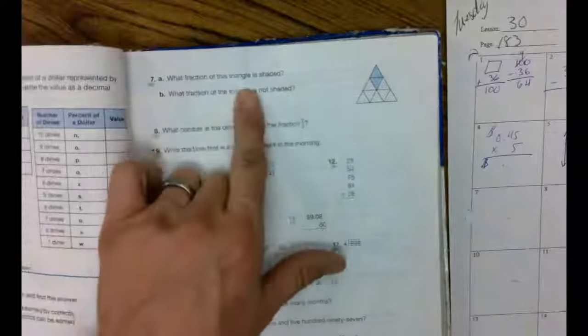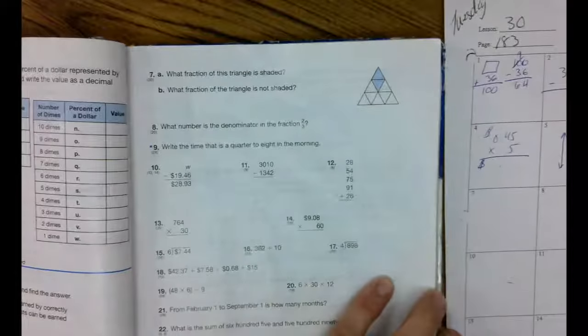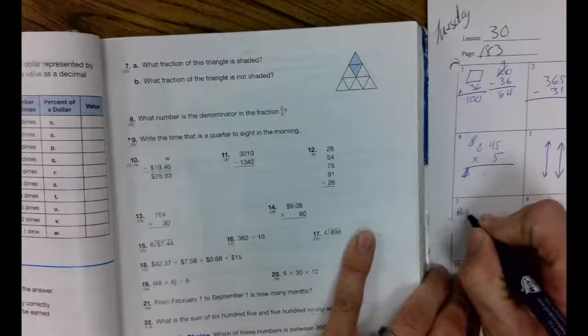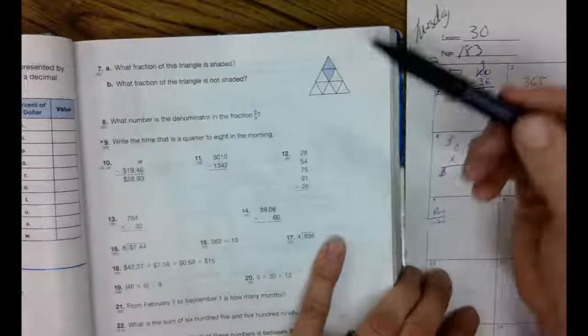Today's number seven. It says what fraction of the triangle is shaded? What fraction of the triangle is shaded? Remember, fractions are part over a whole. I'm going to my paper so I remember it. Part over a whole, which means I've got to count the shaded first.